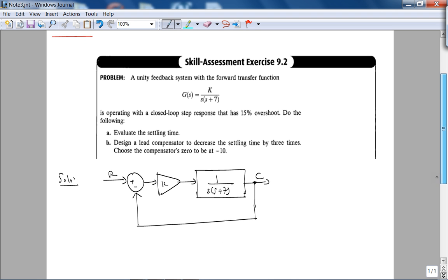Therefore, C over R is k over s squared plus 7s plus k.